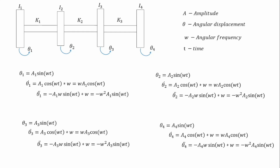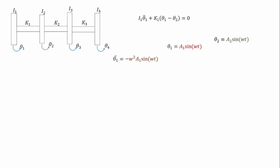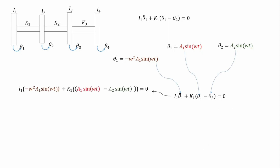We combine these equations with the equations of motion. Recalling the first equation of motion — i1·θ̈1 + k1(θ1 − θ2) = 0 — we insert the values for theta one, theta two, and theta one double dot. Cancelling out sin(ωt), which is common throughout, we get: i1·ω²·a1 + k1(a1 − a2) = 0, which we can rearrange into a new form.